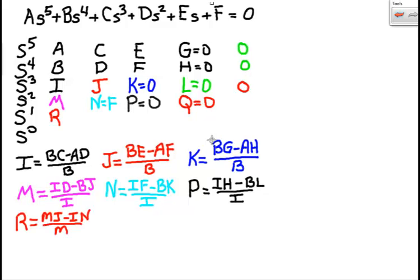Calculate R. M J minus I N divided by M. S is M K minus I P divided by M.